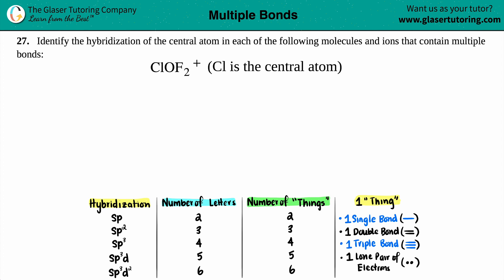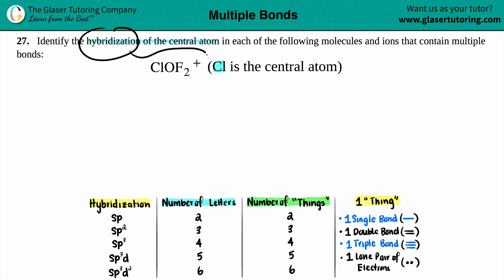Number 27: identify the hybridization of the central atom in each of the following molecules and ions that contain multiple bonds. We have ClOF2 positive, and they do give us a hint that chlorine, the Cl, is going to be the central atom. So in essence, we're just trying to find the hybridization of chlorine.